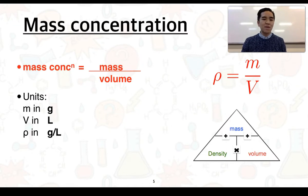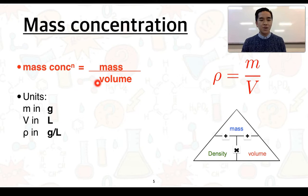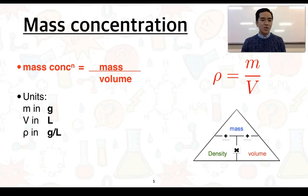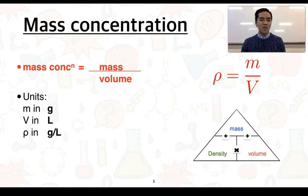We're going to start off by looking at mass concentration. Mass concentration is equal to mass divided by volume. We're firstly going to express mass in grams and volume in litres, so our mass concentration will have the units of grams per litre. The symbol used here is the Greek symbol rho, which is usually used to refer to density and normally applies to pure substances. Density is the mass of matter per unit volume, which is why we use rho for mass concentration.